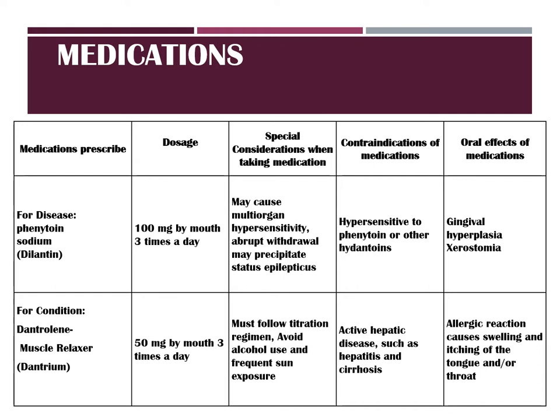For his spinal cord injury, he takes dantrolene, which is Dantrium. He takes 50 mg by mouth three times a day. The only special consideration for this drug is that he must follow the titration regimen very strictly and must avoid any alcohol and frequent sun exposure. Any contraindications include an active hepatic disease such as hepatitis and cirrhosis. Oral effects are none; however, there can be some allergic reactions that cause swelling and itching of the tongue and throat.